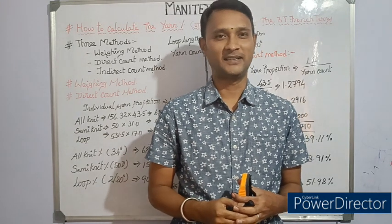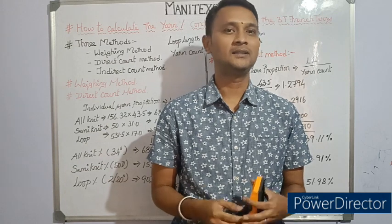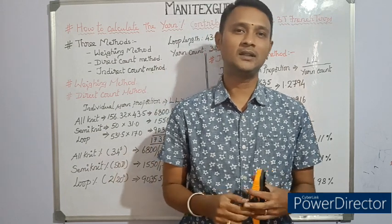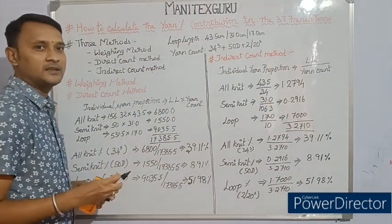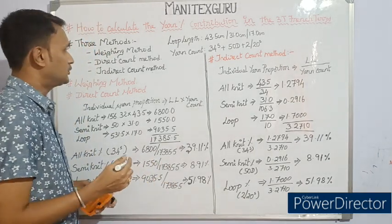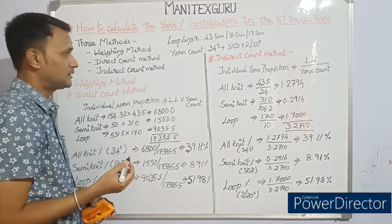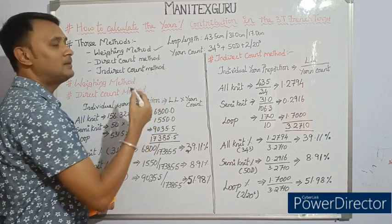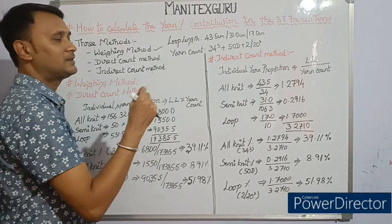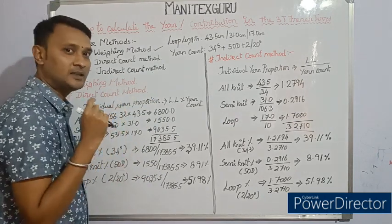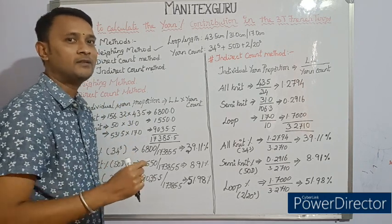Hello all, welcome to Money Tex Blue. In this video we are going to learn about how to calculate the yarn percentage contribution in a three-thread French terry or a fleece fabric. The yarn percentage contribution calculation is made using three different methods: weighing method, direct count method, and indirect count method. Out of these three, the weighing method is the most commonly followed yarn percentage calculation method for a three-thread French terry fabric, but there is a drawback.